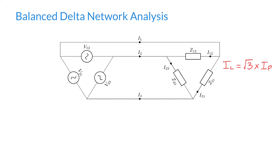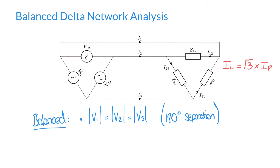Just to remind ourselves of the assumptions we made in the last video when we looked at the balanced star network: when we say that a network is balanced, we're saying that the voltages are of equal magnitude and equal phase separation, and the impedances are equal as well.